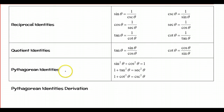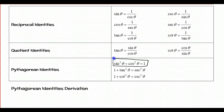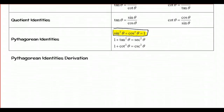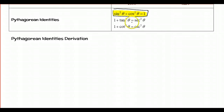Now the Pythagorean identities may or may not be new for you. The key one is really this first one. To be honest, this is the only one I memorize because it's pretty easy — it's sort of like the Pythagorean theorem, except it's sine squared theta plus cosine squared theta equals 1. Once you do the derivation of the other two, it becomes straightforward. So I'm going to show you how to get the second and third Pythagorean identities from the first one.